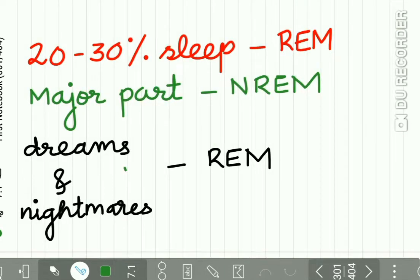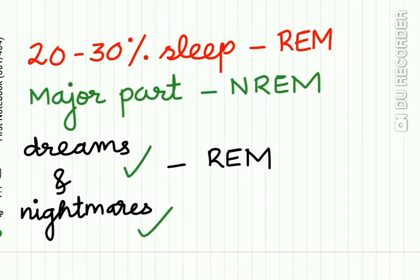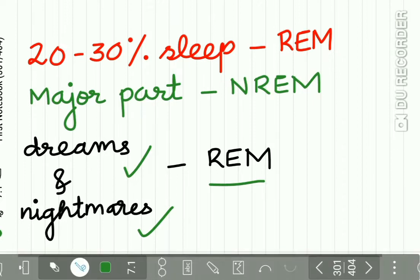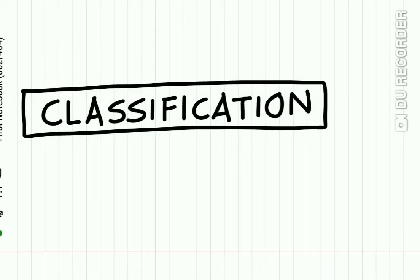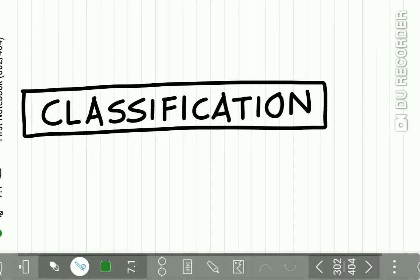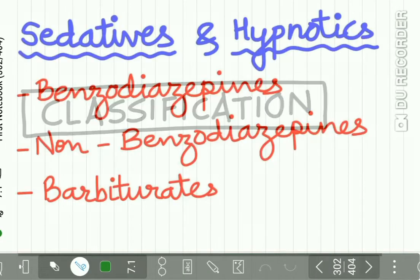Dreams and nightmares occur during REM sleep. This concludes the short discussion about the sleep pattern of an individual. Now let us classify the sedatives and hypnotics.